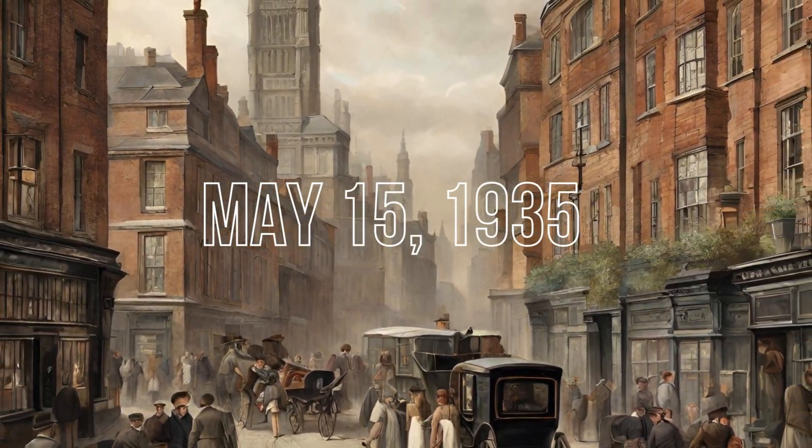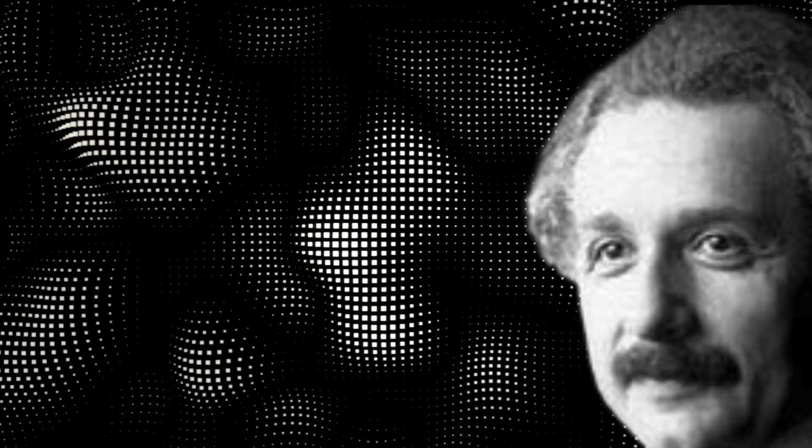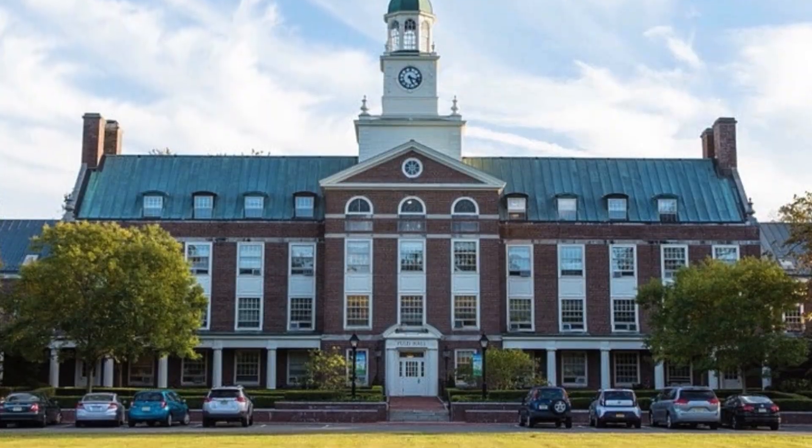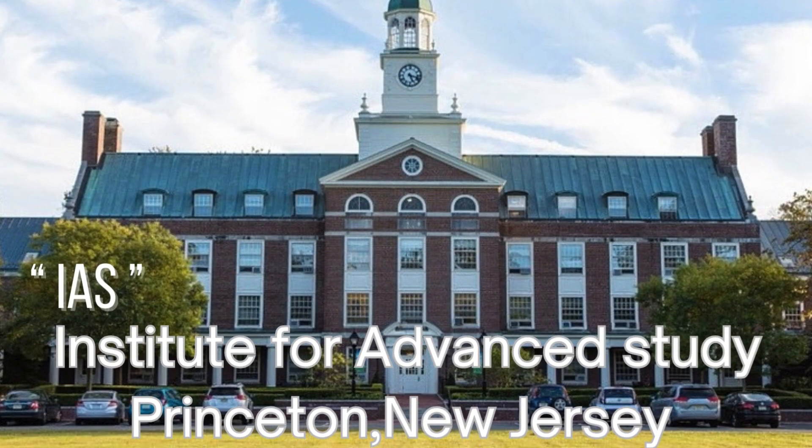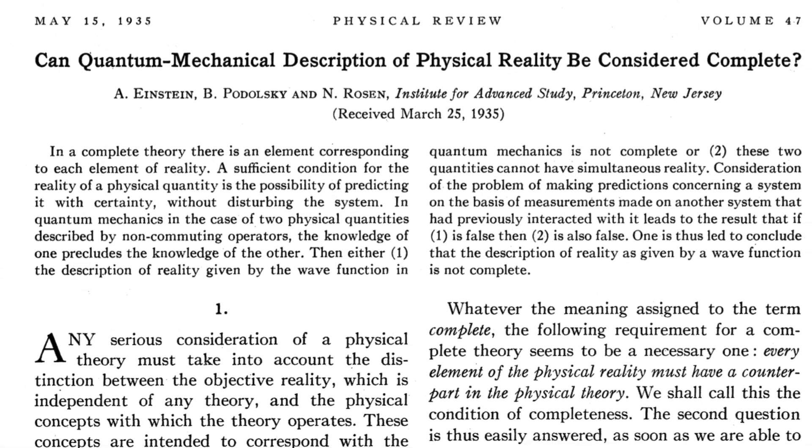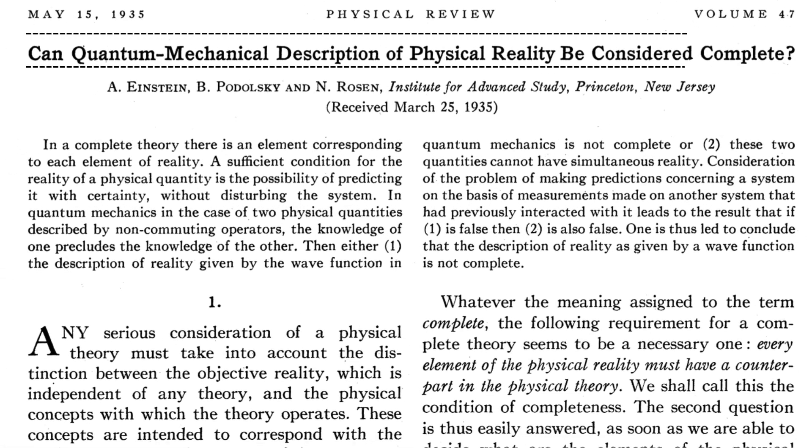On May 15, 1935, Einstein, along with colleagues Boris Podolsky and Nathan Rosen, posed a profound question in a paper from the Institute for Advanced Study in Princeton, New Jersey. Can quantum mechanical description of physical reality be considered complete?